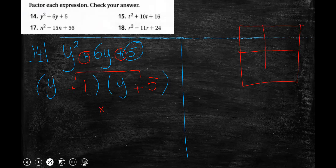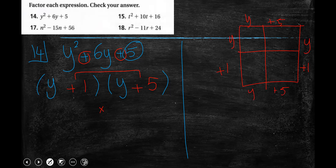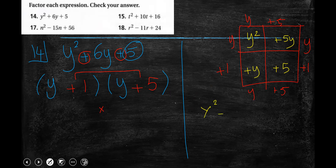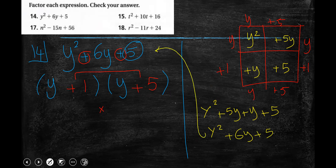Since we have plus signs, I place plus plus: the answer is y plus 1 times y plus 5. Let's verify using a table: y times y is y squared, y times 1 is y, y times 5 is 5y, and 1 times 5 is 5. So we get y squared plus 5y plus y plus 5, which equals y squared plus 6y plus 5. Yes — it matches, so the factoring is correct.